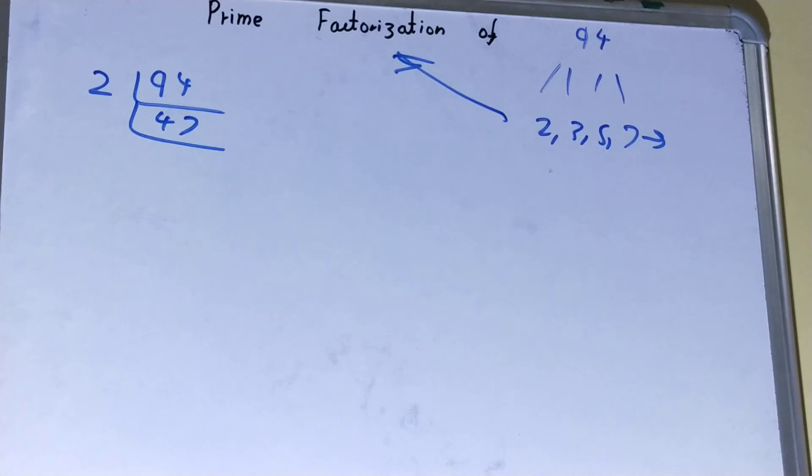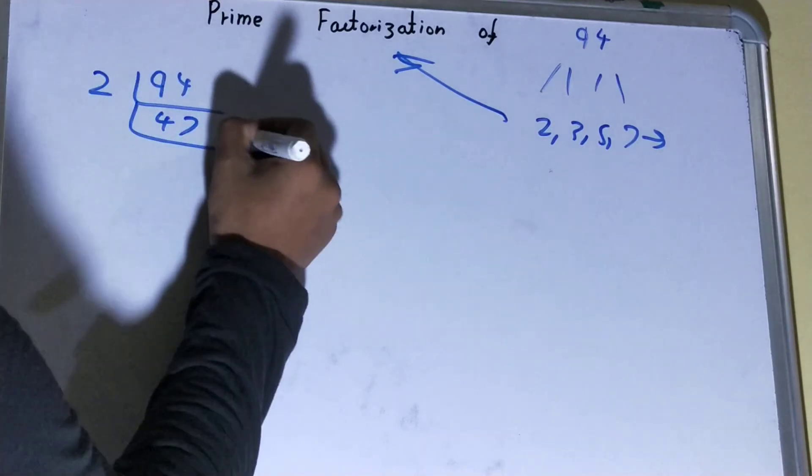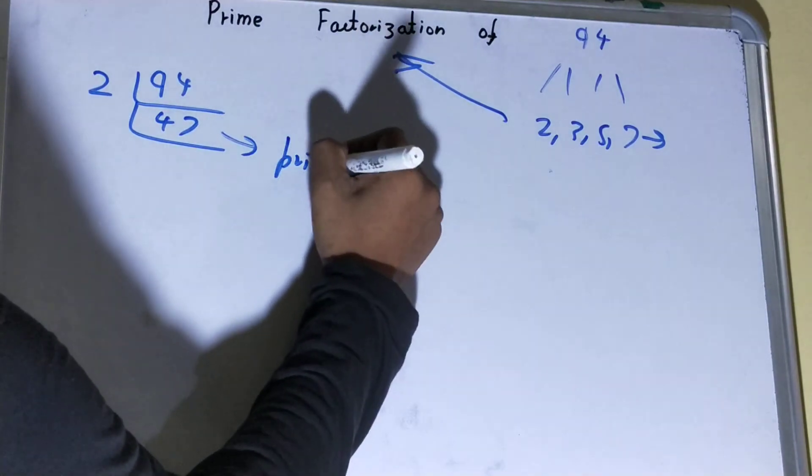With 5 also it will not, with 7 also it will not, with 11 also no, 13 also no, 17 also no. Why so? Because 47 is a prime itself. So you need to be aware of that.